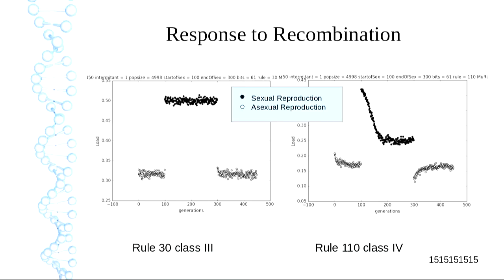When I introduce recombination, hell breaks loose — I've smashed up all those combinations of genes. But I'm selecting those individuals that have the lowest recombination load; they survive more and it drops down to some equilibrium point. Then if I turn recombination off, I've got less mutational load — it's gone into a denser region of genome space. So I can distinguish between class 3 and class 4 machines. Class 4 machines respond to recombination, but nobody knows what they all are because it's undecidable whether something's class 3 or class 4 except by looking at it.